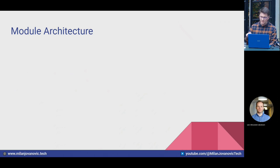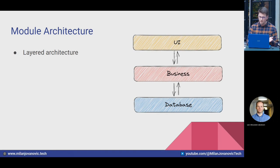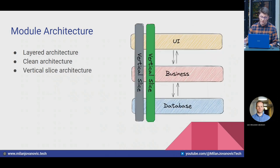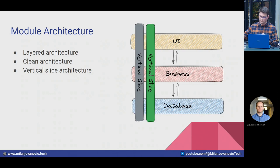Each module being its own subsystem means you need to decide what project-level architecture to apply. You have complete freedom: a traditional layered architecture with three or more layers, clean architecture or onion architecture, or vertical slice architecture where all files related to a single feature are grouped together. You're very flexible in what project-level architecture you apply within your modules.